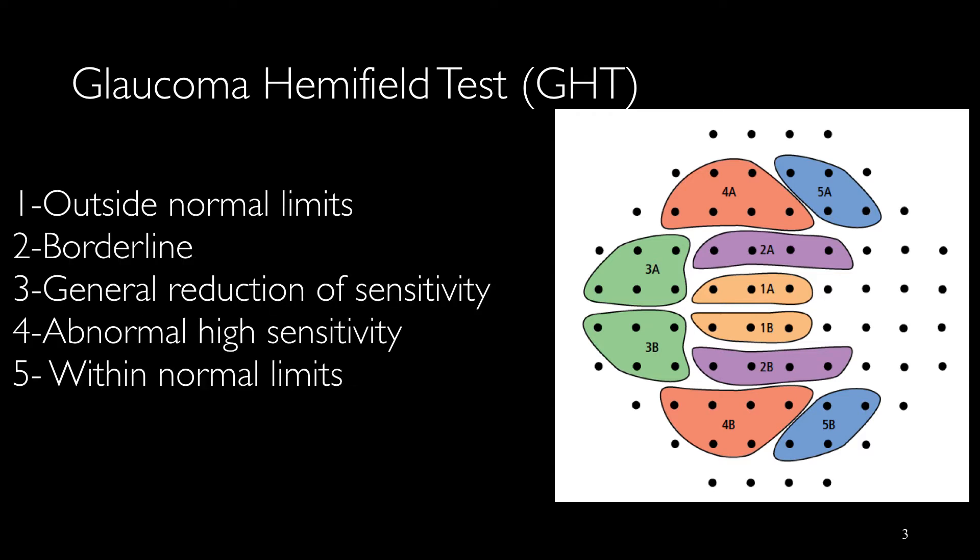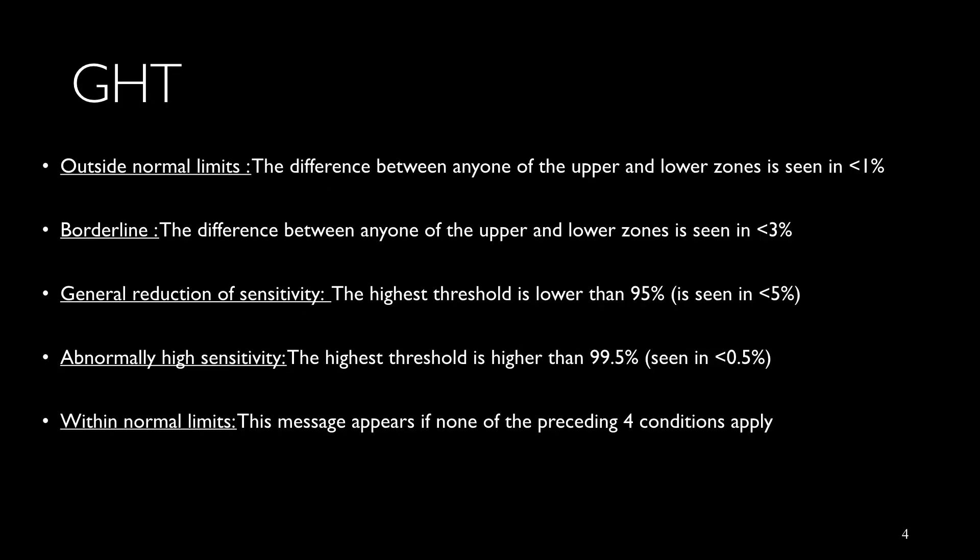In the glaucoma hemifield test, five zones in the upper hemifield are compared with the corresponding zone in the lower hemifield. The reports include one of these five conditions: outside normal limit, borderline, general reduction of sensitivity, abnormal high sensitivity, and within normal limits.